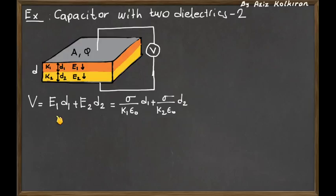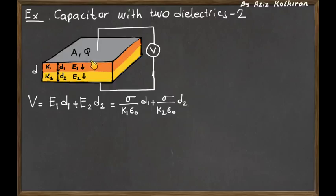We need to be more explicit about these electric fields. As stated, σ divided by (k1 · ε₀) is the electric field inside the first dielectric. Multiplying by d1 gives the potential difference between the upper and lower points of this first dielectric. And σ divided by (k2 · ε₀) is the electric field inside the second dielectric.